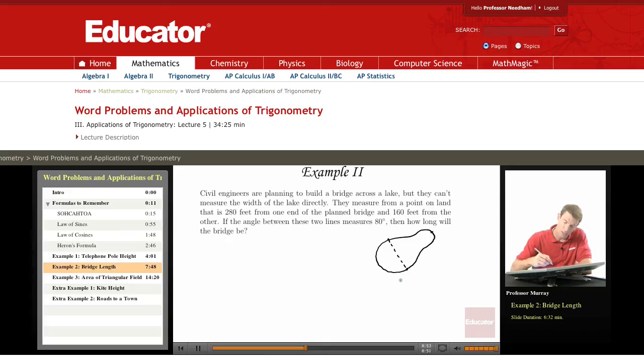And they measure from a point on land that is 280 feet from one end of the bridge and 160 feet from the other. And it says the angle between these two lines measures 80 degrees.